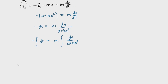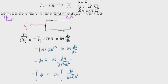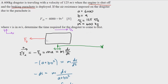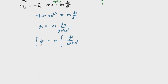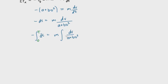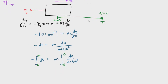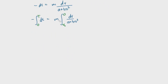We now define the limits of integration. Time t = 0 is defined right when the engine is shut off — at that moment the only force acting is Fd, and the velocity is v₀ = 125 m/s. The final time t = T is when the dragster comes to rest, meaning velocity equals zero. So the time integral runs from 0 to T, and the velocity integral runs from v₀ down to 0.